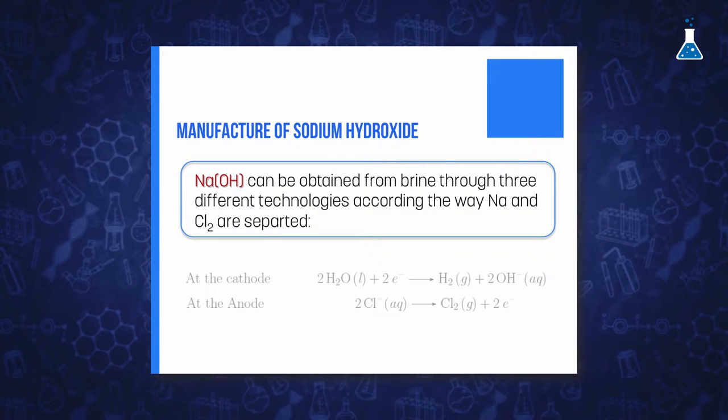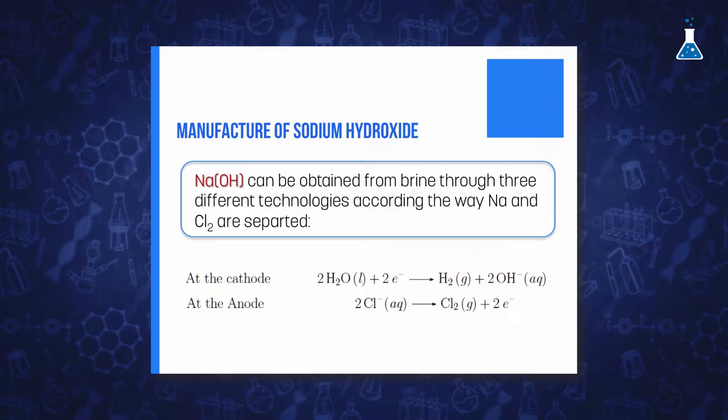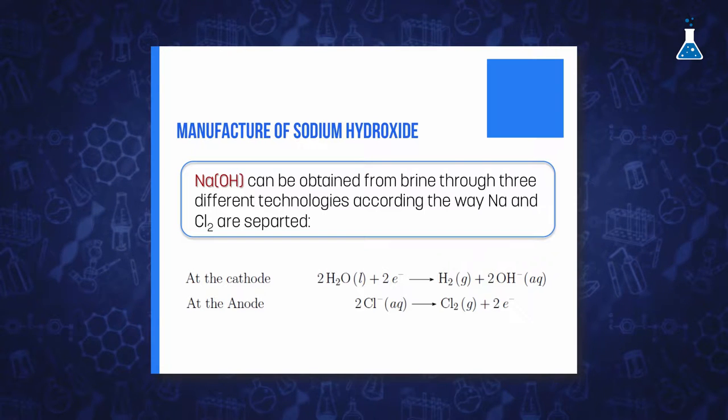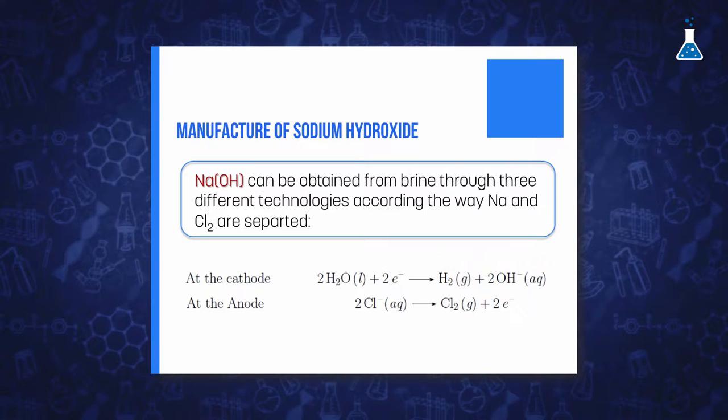The main difference between all technologies is the methodology to avoid that sodium and chlorine gas come into contact. The reactions that happen are the following: at the cathode occurs the reduction of the water and at the anode the oxidation of the chloride ion.